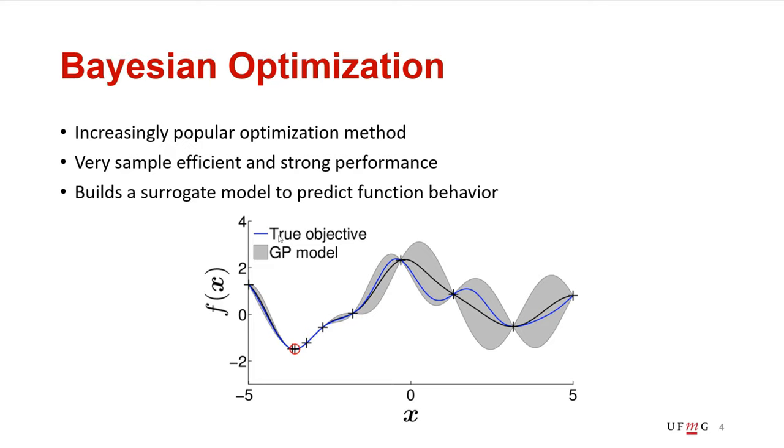The core idea behind Bayesian optimization is that it builds a surrogate model that tries to predict how the function behaves. Bayesian optimization then can use the surrogate model to predict the behavior of the function and then choose points to explore in a more intelligent way.